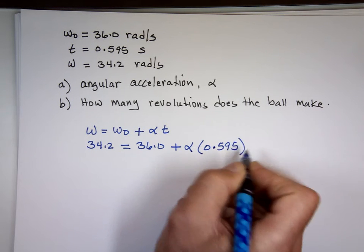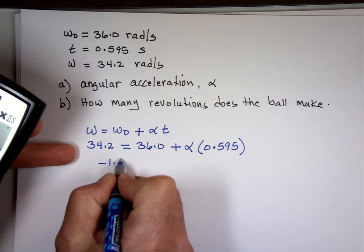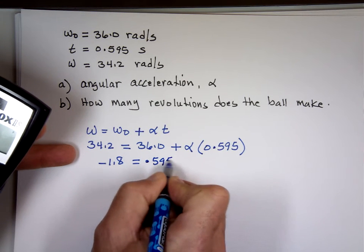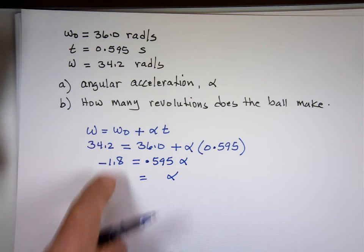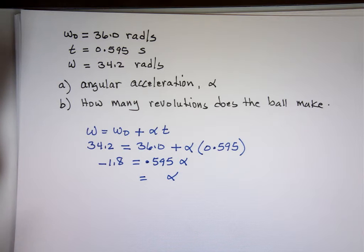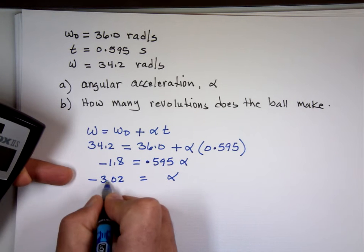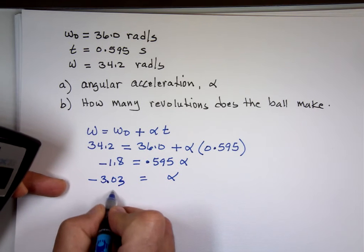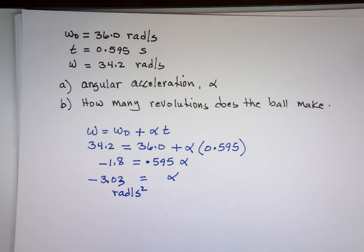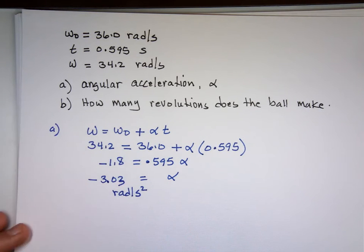So 34.2 minus the 36 equals negative 1.8 equals 0.595 times alpha. And alpha should be, take that number, divide it by 0.595, roughly negative 3.02 or 3.03, and that's rad per second squared. Now, this is part A.